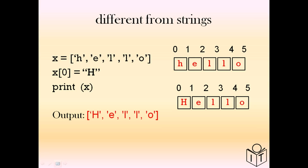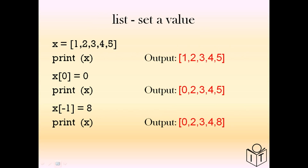If we want to change something in a list we can use the index. Index 0 will change the first value. In this example we have [1, 2, 3, 4, 5]. We change the first element to 0, so we now have [0, 2, 3, 4, 5].